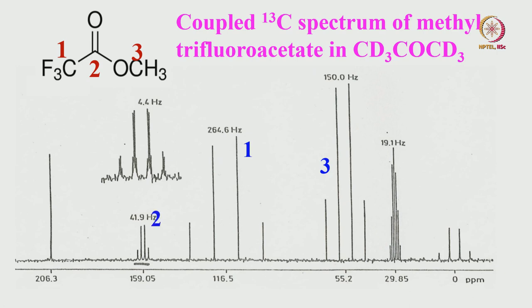If you expand carbon-2, you can see that each line of the quartet is itself a quartet—it is a quartet of quartets. That means this carbon is experiencing coupling with both the CF₃ group and the CH₃ group. The CF₃ fluorines give a large quartet of approximately 42 Hz, and each line is further split into a quartet because of long-range coupling with CH₃ protons. This is very clearly understandable. We can now make complete assignments.